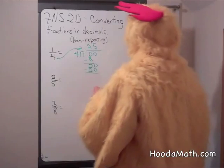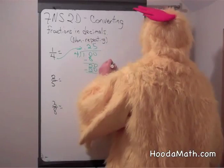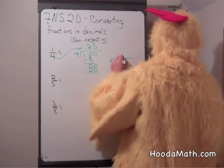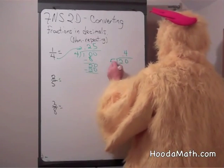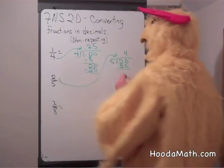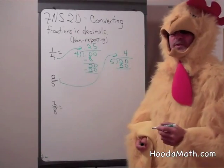Two-fifths. Five into two. Five goes into twenty four times. Four times five is twenty. So the equivalent decimal to the rational number two-fifths is four-tenths.